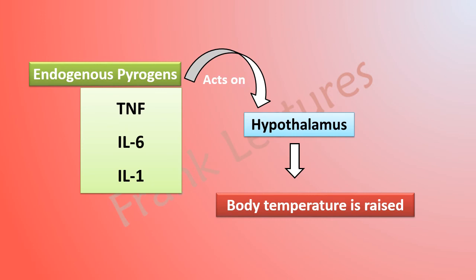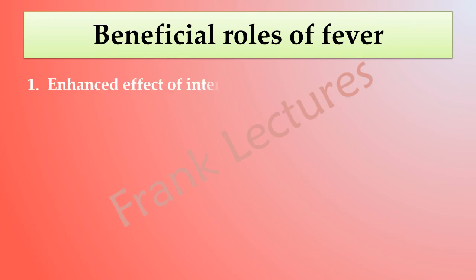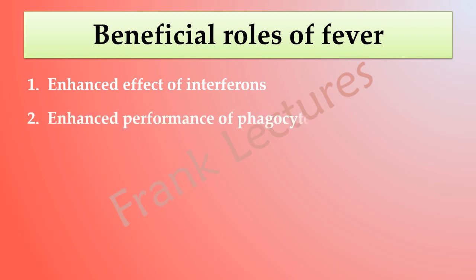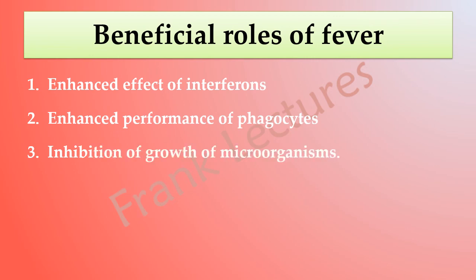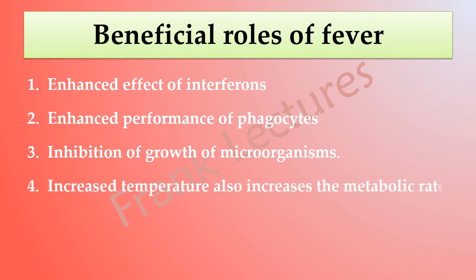Fever continues as long as pyrogens are present. The exact role of fever is not fully understood, but some beneficial roles include an enhanced effect of interferons, enhanced performance of phagocytes, and inhibition of the growth of microorganisms. Fever causes the liver and spleen to sequester iron and zinc, making them less available to support bacterial growth. The increased temperature also increases the metabolic rate of tissue cells, speeding up the repair process.